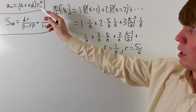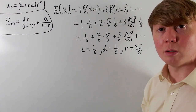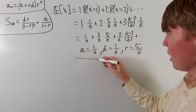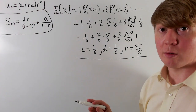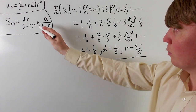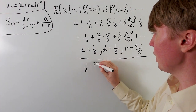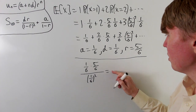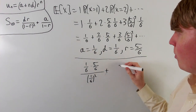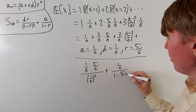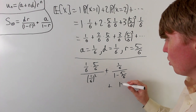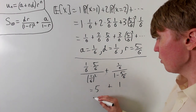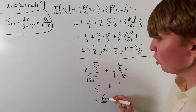Plugging into the infinite sum formula: d·r/(1 − r)² = (1/6)·(5/6)/(1/6)² = (5/36)/(1/36) = 5, and a/(1 − r) = (1/6)/(1/6) = 1. So the expected number of rolls is 5 + 1 = 6, which is the well-known result for a geometric distribution with p = 1/6.